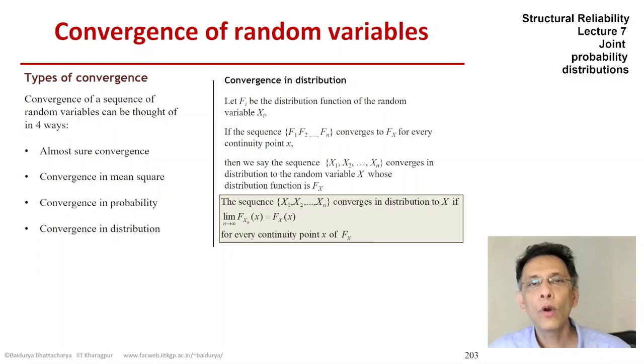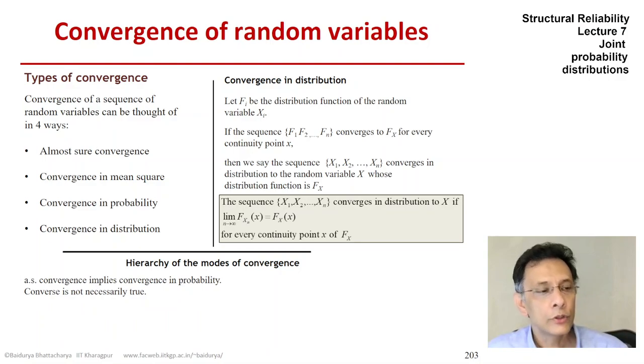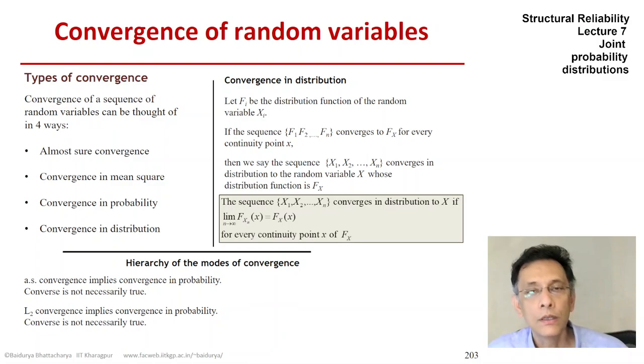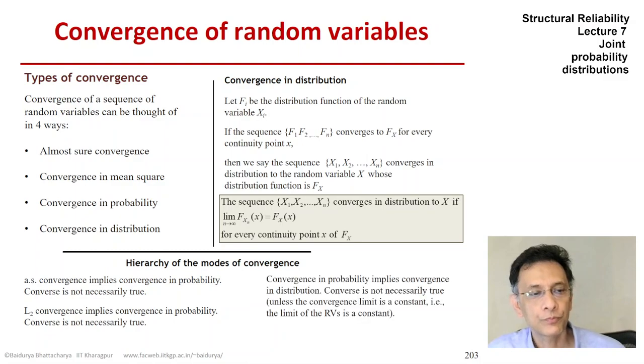Now, how do they stack up against each other? So what is the hierarchy? The almost-sure convergence implies, as we discussed, convergence in probability, but the converse is not necessarily true. So convergence in probability is a much weaker statement. Likewise, mean square convergence also implies convergence in probability, but the converse is not necessarily true, and convergence in probability in turn implies convergence in distribution and the converse is not necessarily true.